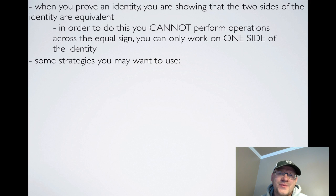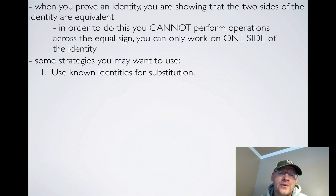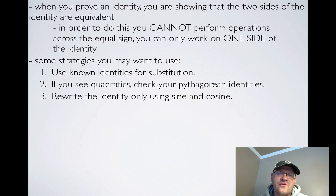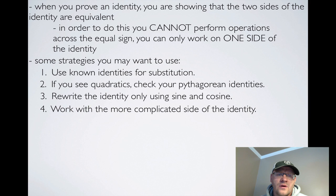Here are some strategies you may want to use. One: use known identities for substitution — have all your identities on a sheet of paper right in front of you. Two: if you see quadratics, check the Pythagorean identities. Three: rewrite the identity using only sine or cosine. Four: work with the more complicated side of the identity first.